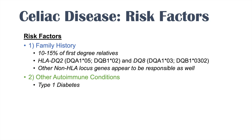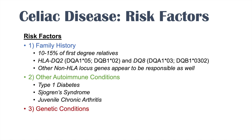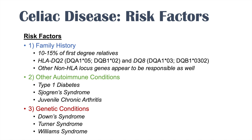Autoimmune conditions like type 1 diabetes, Sjögren's syndrome, and juvenile chronic arthritis increase risk for celiac disease. Additionally, certain inherited genetic conditions are associated with increased risk: individuals with Down syndrome, Turner syndrome, and Williams syndrome all have an increased risk for celiac disease.